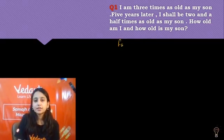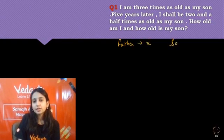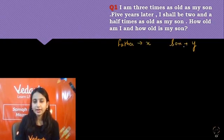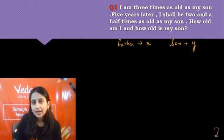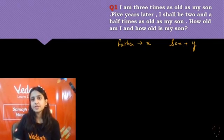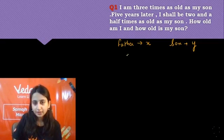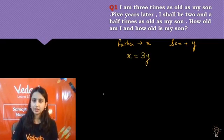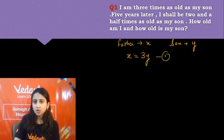So let's say father's age is x and son's age is y. The father is saying I am three times as old as my son, so x equals 3y. This is equation 1.